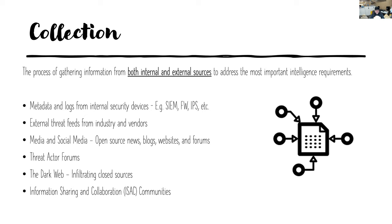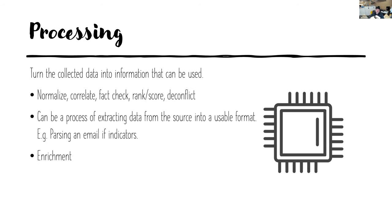You don't want to rely on a single source. Just like when we're researching a product to buy — say we're looking at buying a car — we want different perspectives and different reviews to get an understanding of the good and bad. Once we gather all that information, we need to process it in a way that is easy to manage. We want to normalise, correlate, check, rank it in some way, and have it in a more human-readable format.